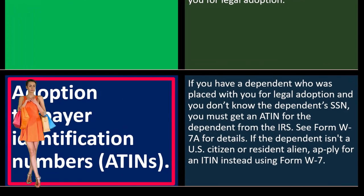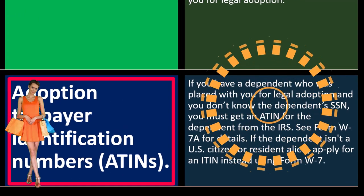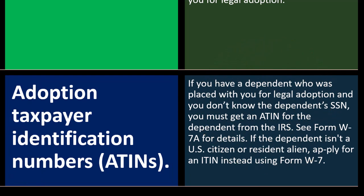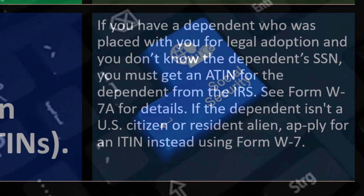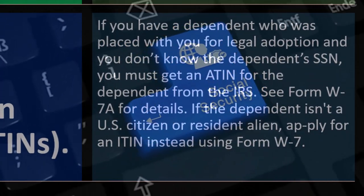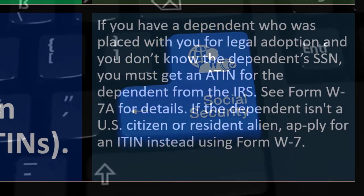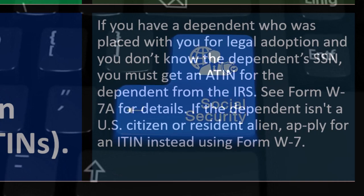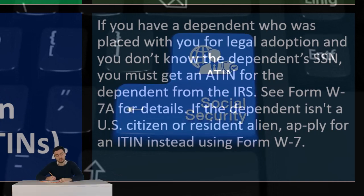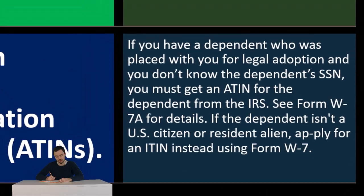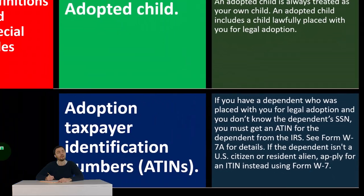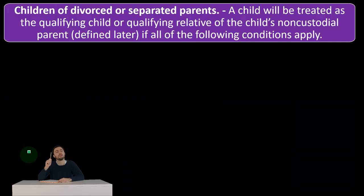Adoption taxpayer identification number — that's an ATIN (A-T-I-N). If you have a dependent placed with you for legal adoption and you don't know the dependent's SSN, you must get an ATIN for the dependent from the IRS. See Form W-7A for details. If the dependent isn't a U.S. citizen or resident alien, apply for an ITIN instead using Form W-7.